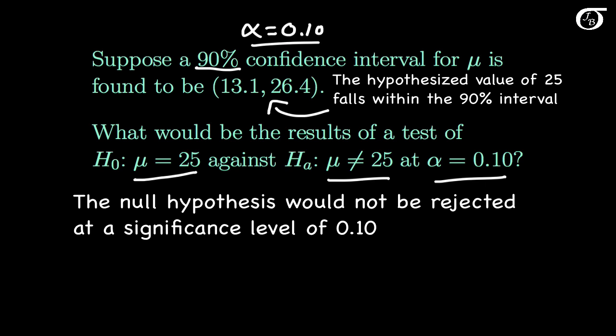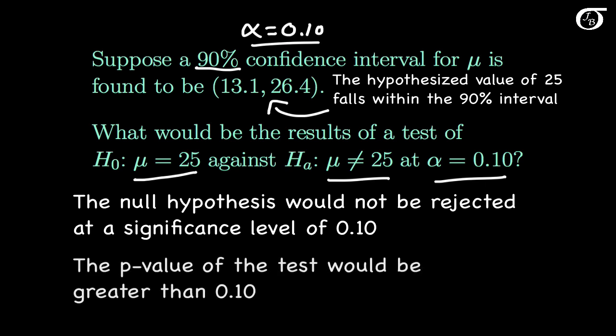Loosely speaking, 25 is a plausible value of mu. And since we would not reject the null hypothesis at a significance level of 0.1, we know that the p-value would be greater than 0.1.